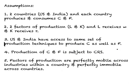The fourth assumption is that production of clothing and food is subject to CRS, which stands for Constant Returns to Scale. What Constant Returns to Scale means is: if we increase all inputs — for example, labor and capital — by 100% each, output will also increase by 100%.